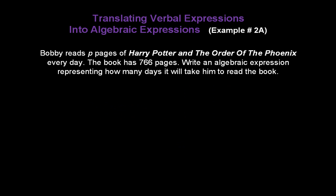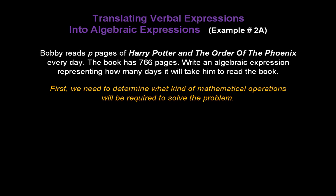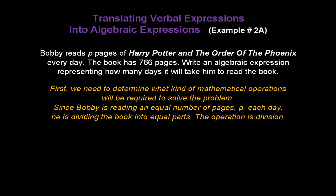Bobby reads p pages of Harry Potter and the Order of Phoenix every day. The book has 766 pages. Write an algebraic expression representing how many days it will take him to read his book. We need to determine what mathematical operations are required. Since Bobby is reading an equal number of pages, p, every day, he's dividing the book into equal parts. So the operation is division. Take the whole book, 766 pages, and divide it by p.